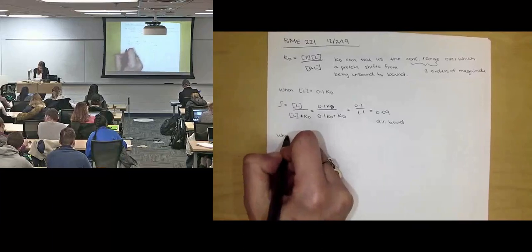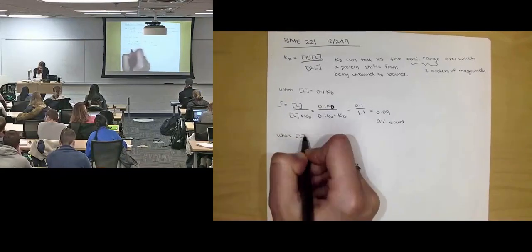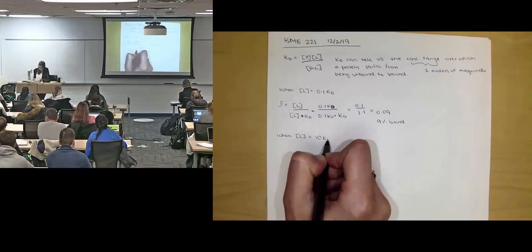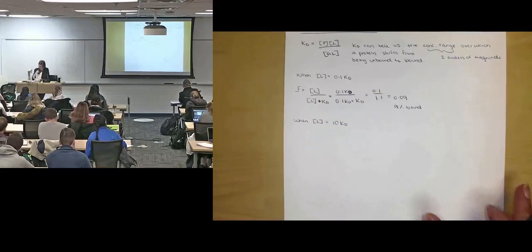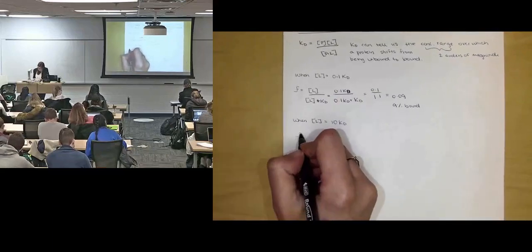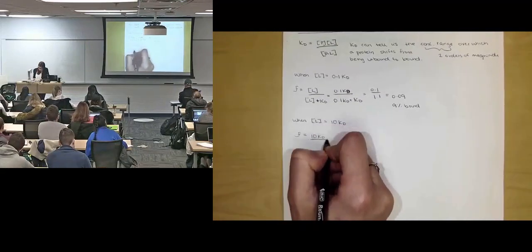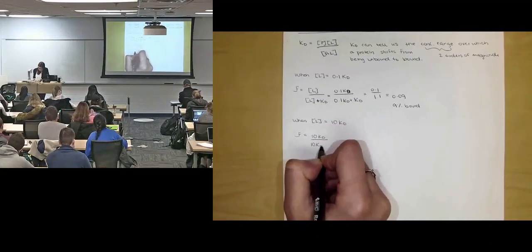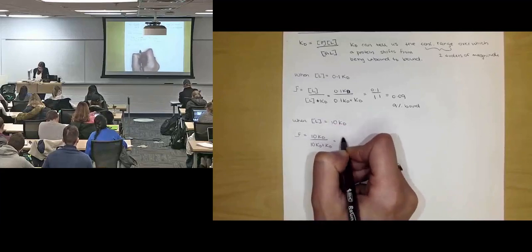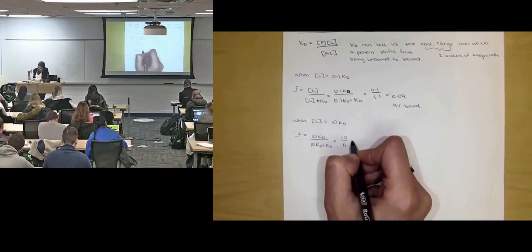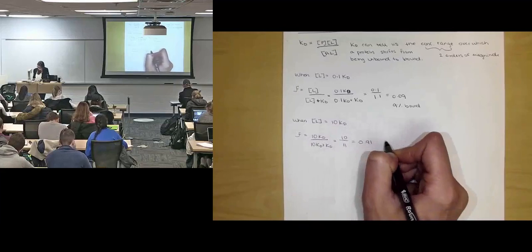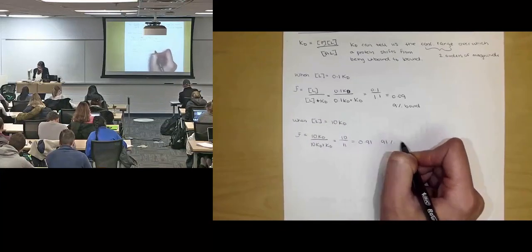And so then, alternatively, if you let the ligand concentration be 10 times the dissociation constant for that particular pair, then you can set up fractional saturation as 10 KD over 10 KD plus KD. This is going to be 10 over 11, or 0.91, or about 91% bound.